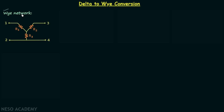A Y network is a network in which three resistors are connected in a manner that they form the letter Y — that's why we call it a Y network. R1, R2, and R3 are the three resistors.